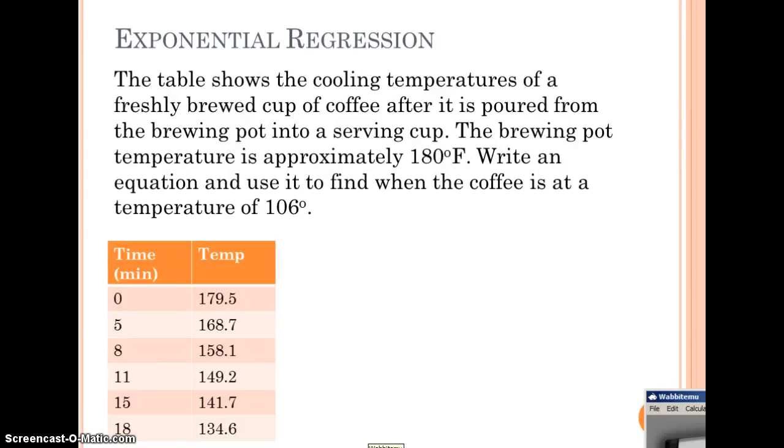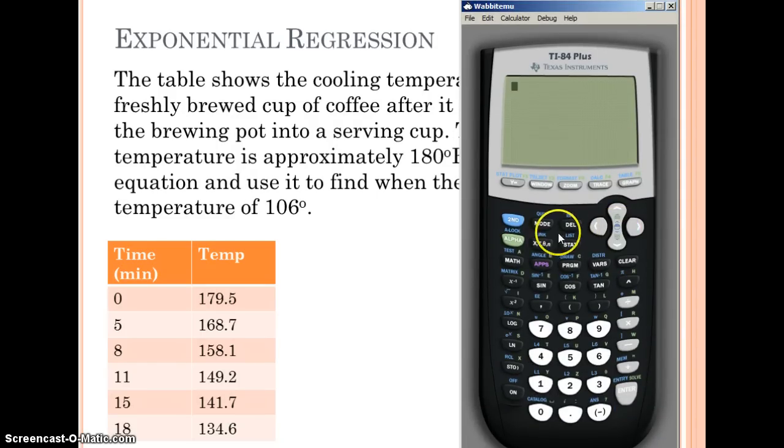Our last example is exponential regression. This table shows the cooling temperatures of a cup of coffee. We want to write an equation and use it to find when the coffee is at a temperature of 106 degrees. We're going to go to our calculator and change our list. First, make sure we clear our y equals so when we go to graph it doesn't mess anything up. Go to stat edit, type in L1 our time and L2 our temperatures. Once you get those in, you can graph it. Our window's off, so we can go zoom 9 and we can see our plot.